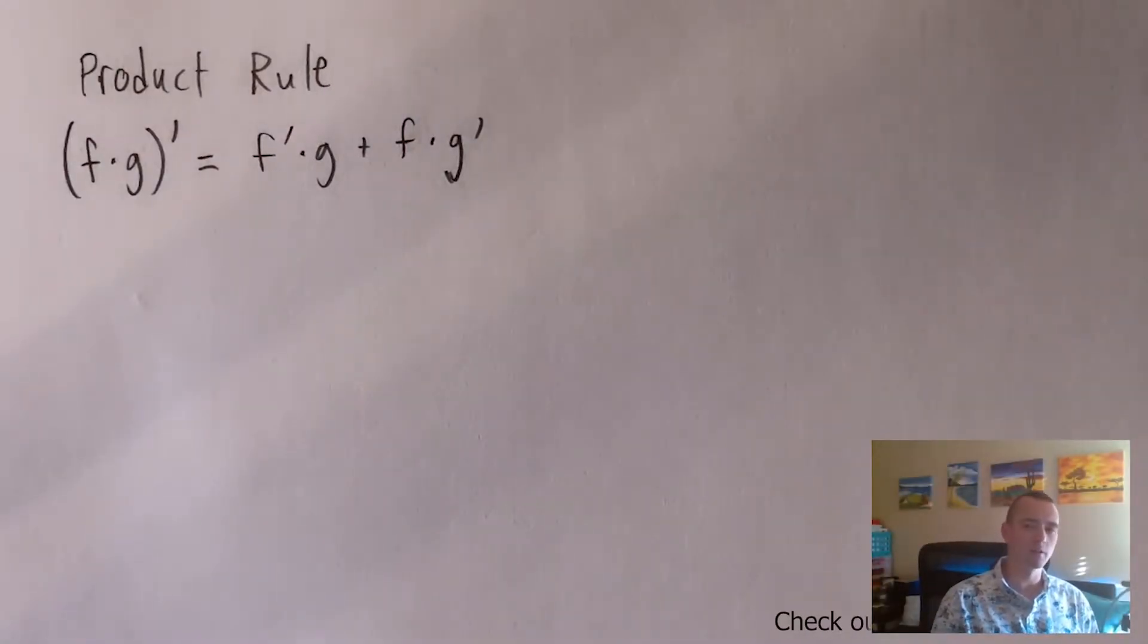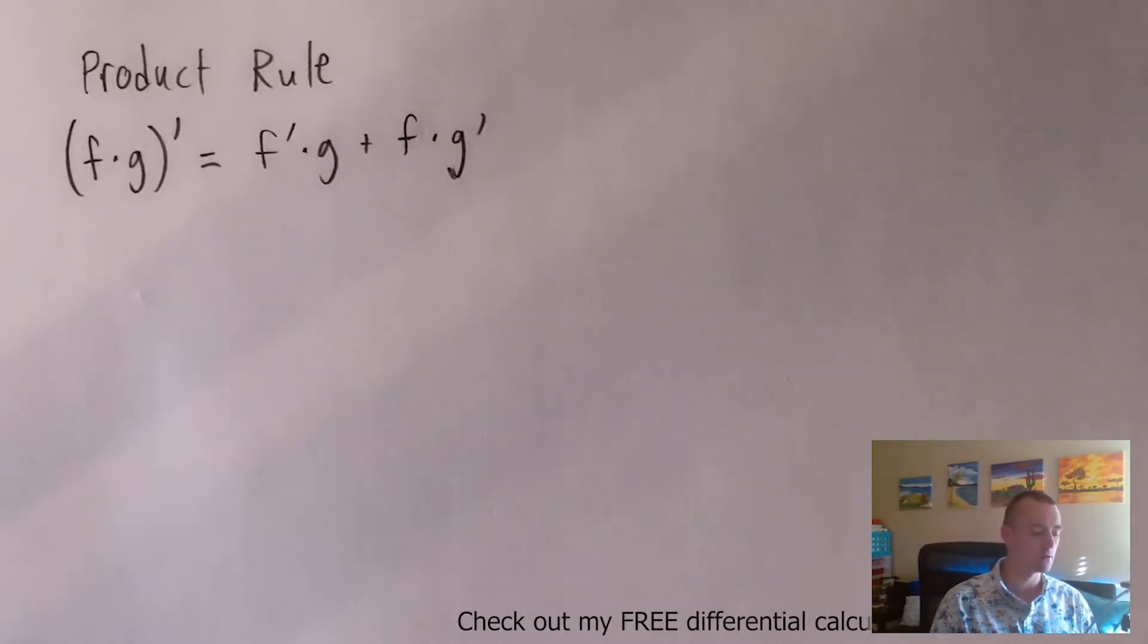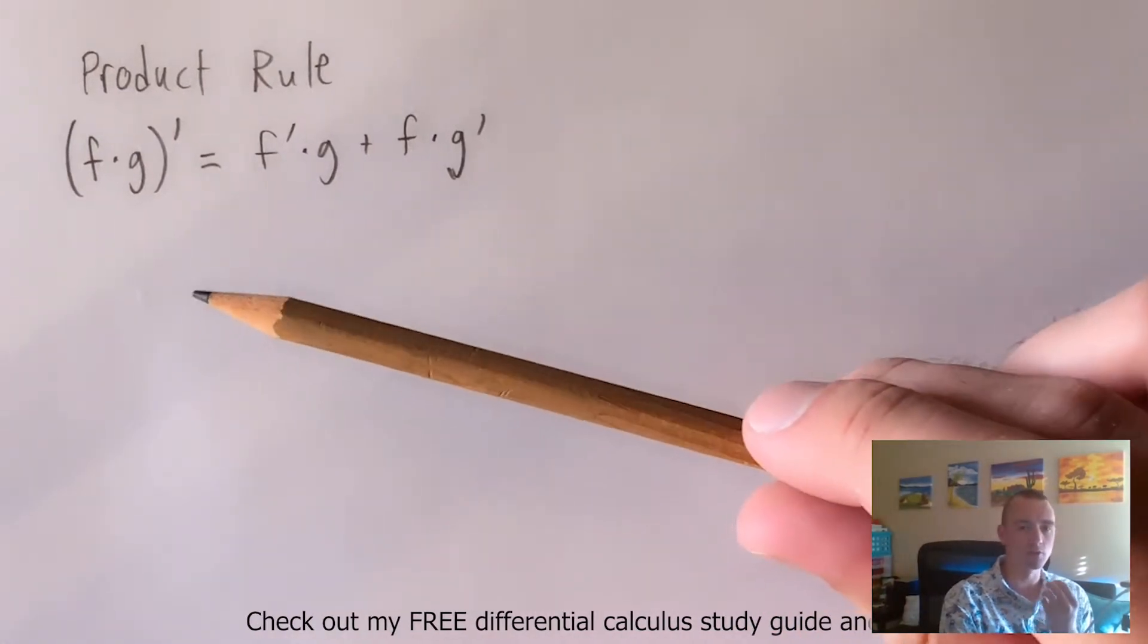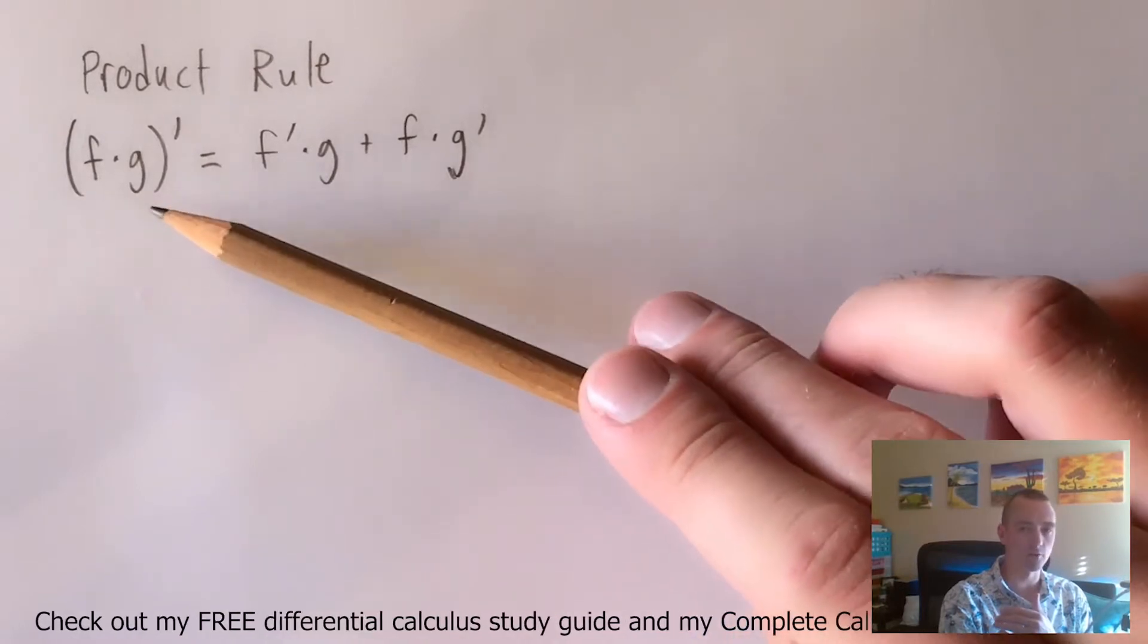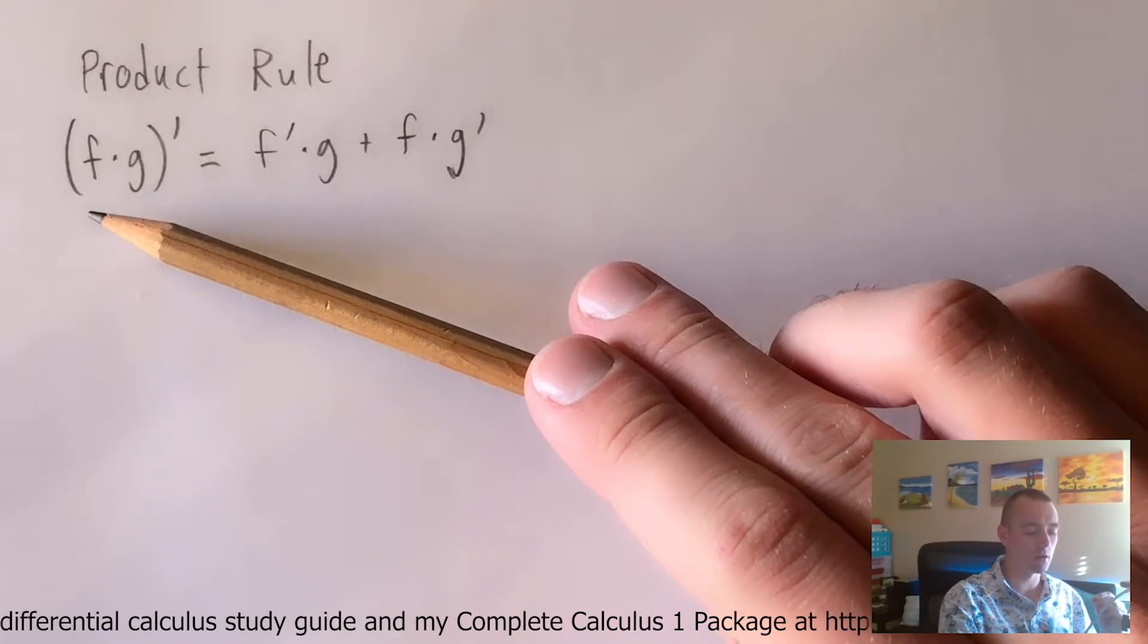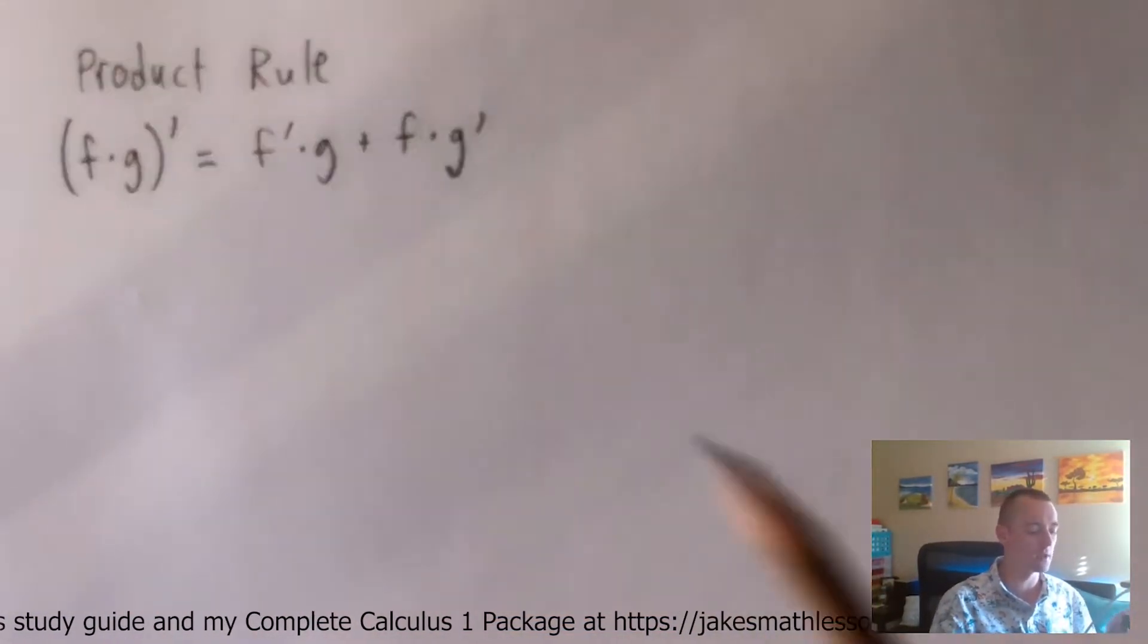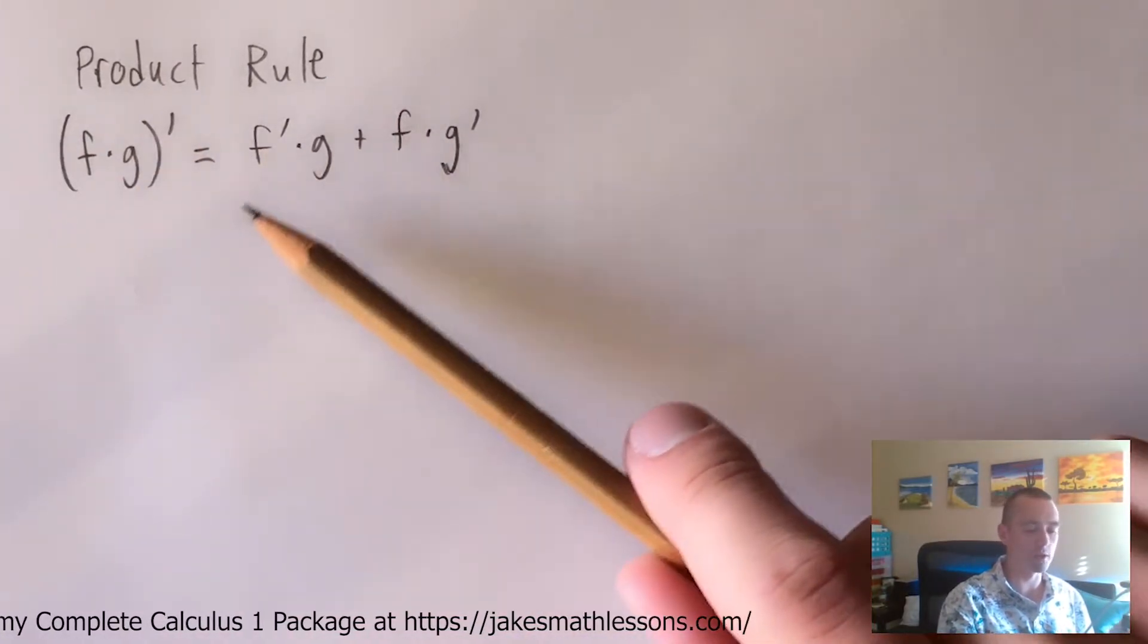So like I said in the intro, we're going to be talking today a bit about the product rule. So I started by just simply writing what the product rule says here on the screen. You can see the product rule is basically just a formula that tells you how to find the derivative of a function that is the product of two simpler functions. So for any function that you can write as f times g, basically break it down into the product of two simpler functions, you can find the derivative of that whole thing by using this formula.